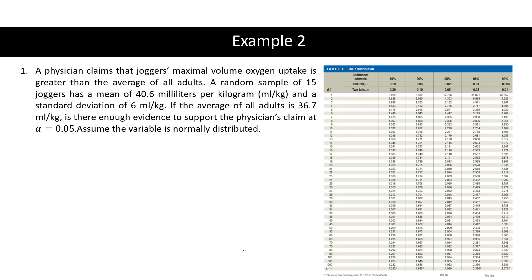Problem number two: A physician claims that joggers' maximal volume oxygen uptake is greater than the average of all adults. A random sample of 15 joggers has a mean of 40.6 ml/kg and a standard deviation of 6 ml/kg. If the average of all adults is 36.7 ml/kg, is there enough evidence to support the physician's claim at alpha = 0.05? Assume the variable is normally distributed.